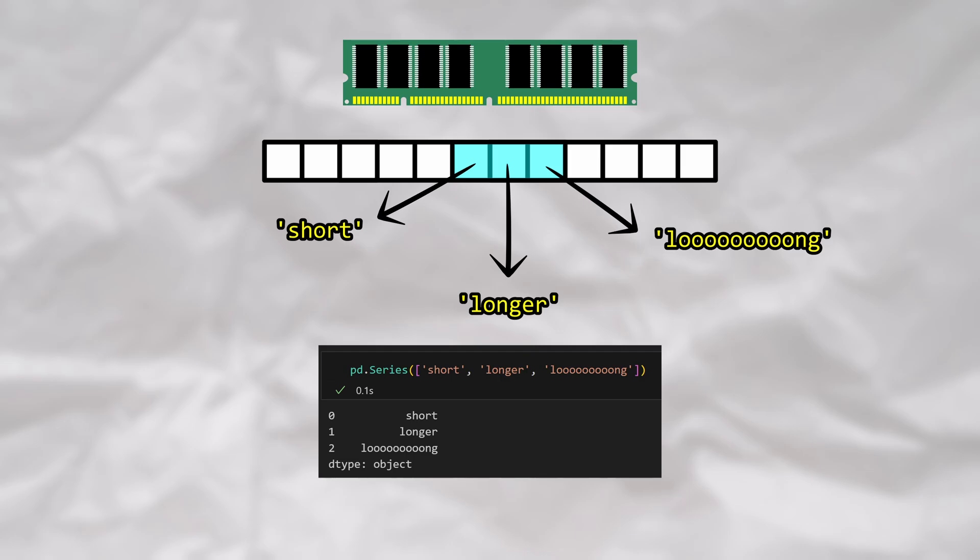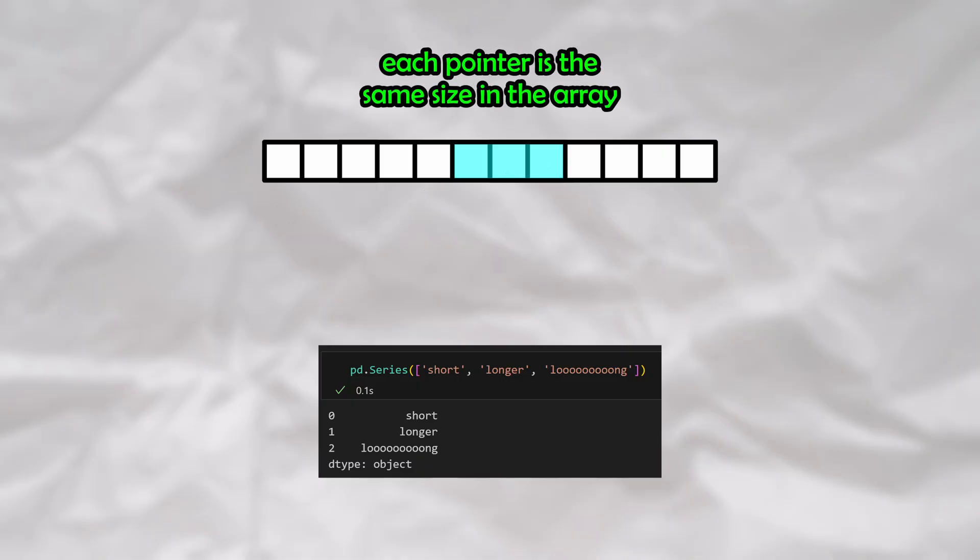This way, the pointers are the data that end up being stored in the contiguous memory blocks of the series, not the strings themselves. Since the pointers are all the exact same size, the memory blocks in the series remain a fixed size, and the pointer arithmetic that we saw at the beginning of the video still applies.